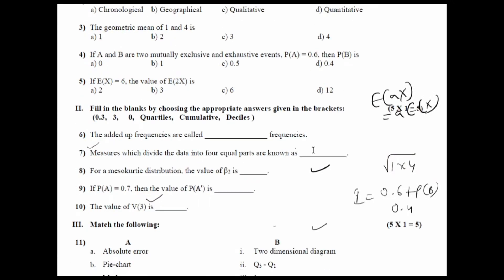Next is fill in the blanks. Let us concentrate on the fill in the blanks part here. First one is, what is the added of frequency are called as? The added of frequencies are called as cumulative frequency. So, the correct answer here is cumulative frequency.